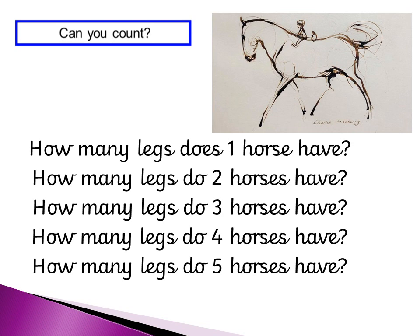Hopefully you've recognised that our four times table is going to be useful there. So: one horse has four legs, two horses eight, three horses twelve, four horses sixteen, and five horses twenty legs.